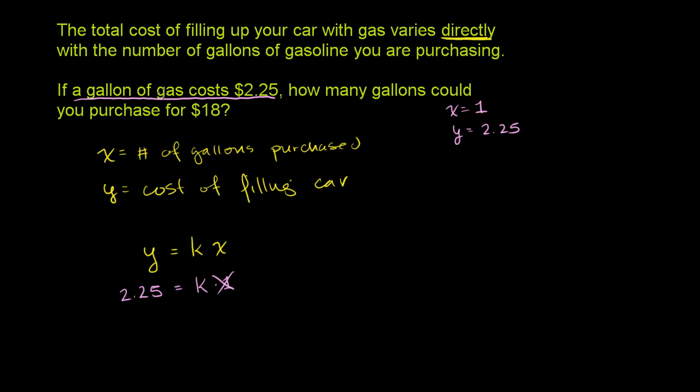That's what this told us right there. So the equation, how y varies with x, is y is equal to 2.25x, where x is the number of gallons we purchase. y is the cost of that purchase. So it's $2.25 a gallon.